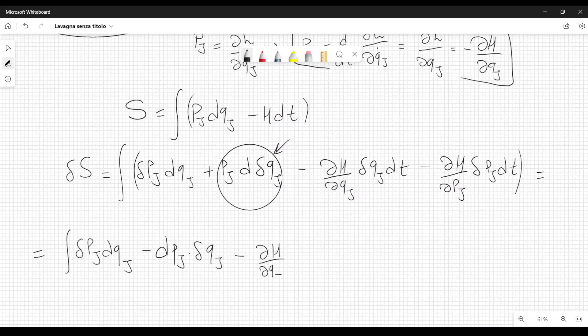dH over dq j, variation of q j dt minus dH over dp j, variation of p j dt.